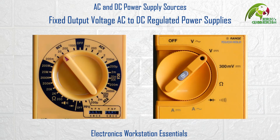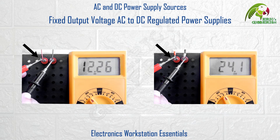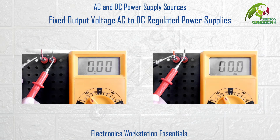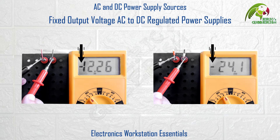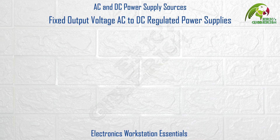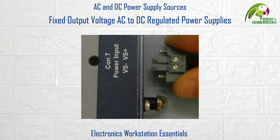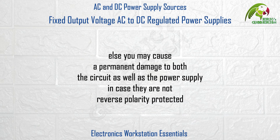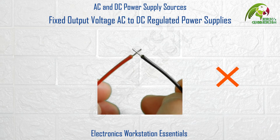When measuring the DC output voltage on a multimeter on the DC voltage mode, make sure that the test leads are connected red to positive and black to negative. In case the probe polarities are reversed — black to positive and red to negative — the multimeter will indicate the same with a negative sign before the voltage reading. As a thumb rule, always check and confirm the polarity of the DC power supply output using a multimeter before connecting it to any circuit. Else you may cause permanent damage to both the circuit as well as the power supply in case they are not reverse polarity protected. And as with all types of power supply sources be it AC or DC, the output wires or terminals should never be shorted or connected to each other when on.